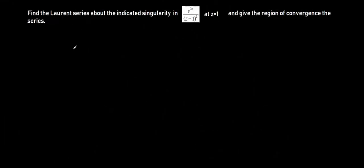In this video, we are going to be finding the Laurent series about the isolated singularity in its expression at the point z equal to 1. We are also to give the region of convergence of the series. We have been given exponential 2z divided by z minus 1 raised to the power of 3.